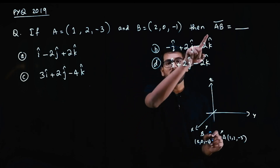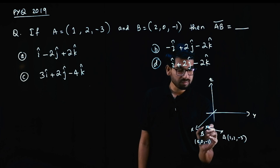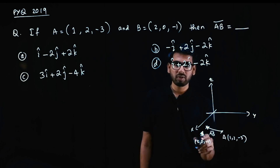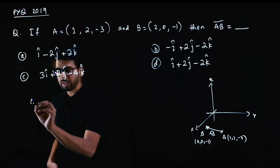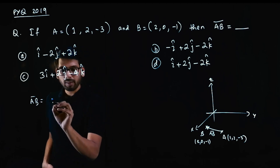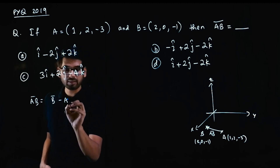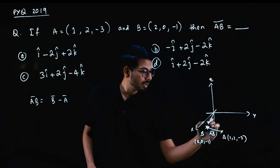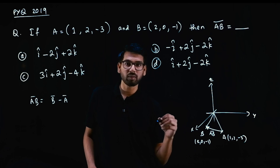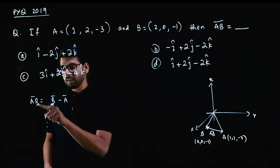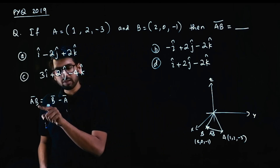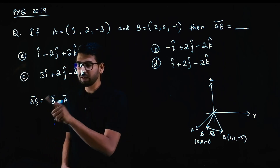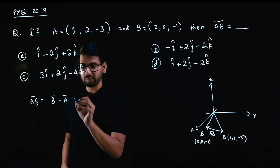We have AB vector. AB vector will be something like this. So AB vector is B minus A — that is, vector B minus vector A, or OB minus OA. Always: second letter is first, first letter is second, subtracted. So AB vector is found by subtraction.